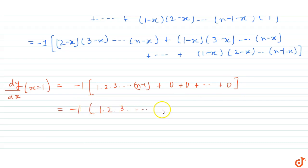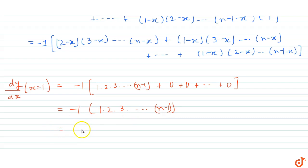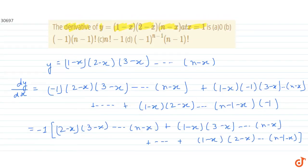So we get minus 1 into 1 × 2 × 3 × ... × (n minus 1), and we know this is the formula for (n minus 1) factorial. Therefore the answer is minus 1 into (n minus 1) factorial. Looking at the options, option B is the correct answer.